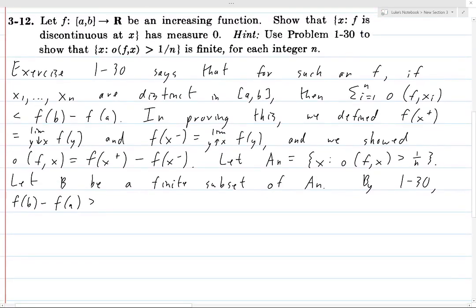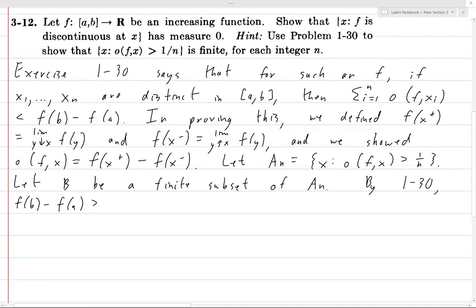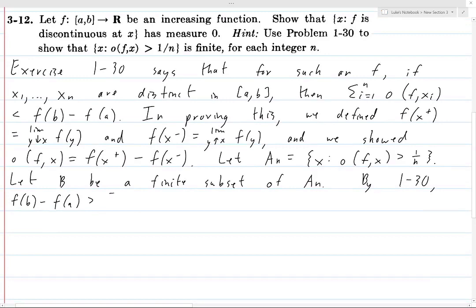We can use exercise 1-30 to prove that f(b) minus f(a) is greater than—if we take the sum overall x in B of the oscillation of f at x, then what we're doing is we're taking a finite number of points in the interval from a to b and evaluating this oscillation of f at x.